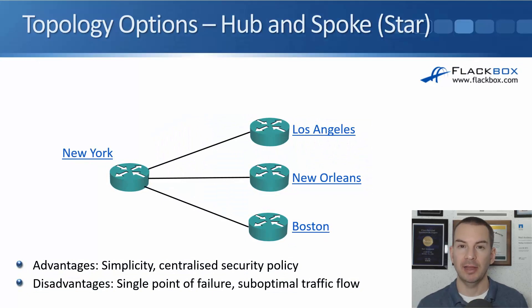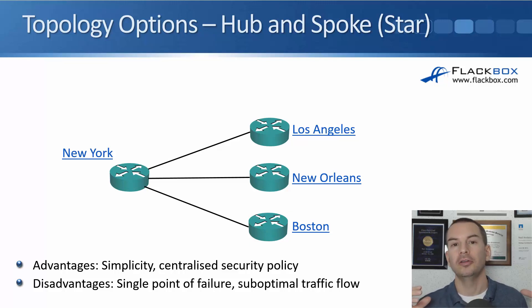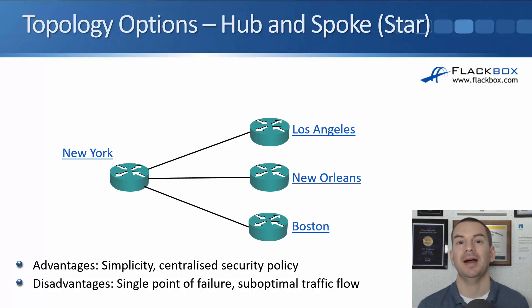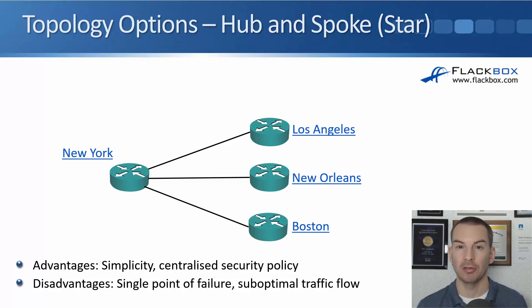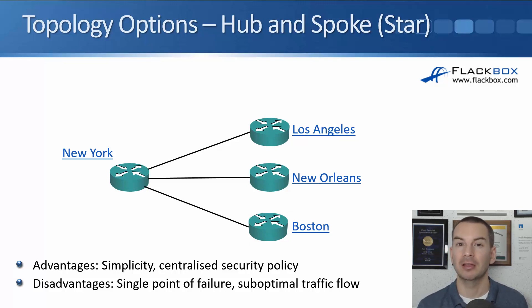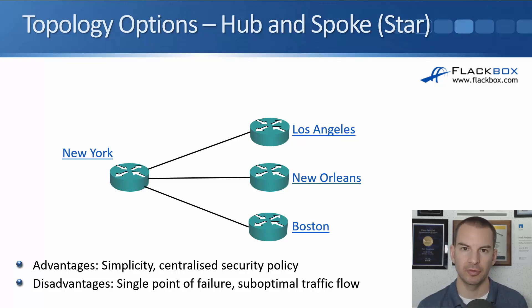This is the last lecture in the WAN section and it's going to be a short lecture on the WAN topology options. Just imagine that all of your connections are point-to-point leased lines and we're thinking about our WAN connections between our offices. Don't think about internet connections or VPN connections because it will just get confusing. You're going to get questions on this in the CCNA exam, and the easy way to answer them is to think of point-to-point leased lines between offices.